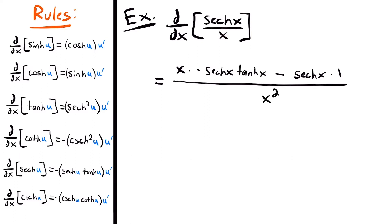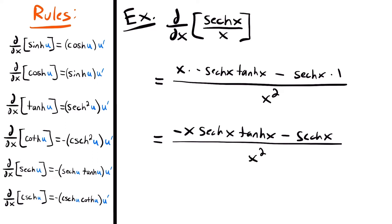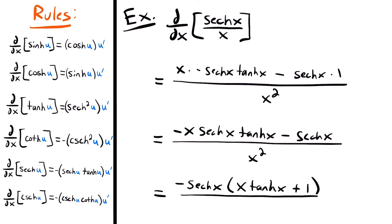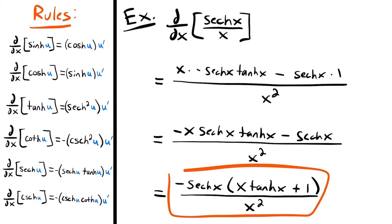Simplifying, we get negative x times hyperbolic secant of x times hyperbolic tangent of x, minus hyperbolic secant of x, divided by x squared. Both numerator terms share a factor of negative hyperbolic secant of x, so we factor it out, giving negative hyperbolic secant of x times the quantity x times hyperbolic tangent of x plus 1, all divided by x squared.